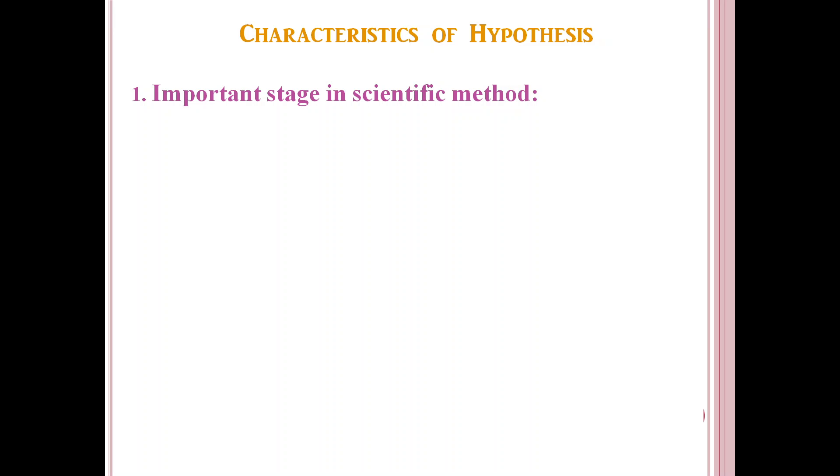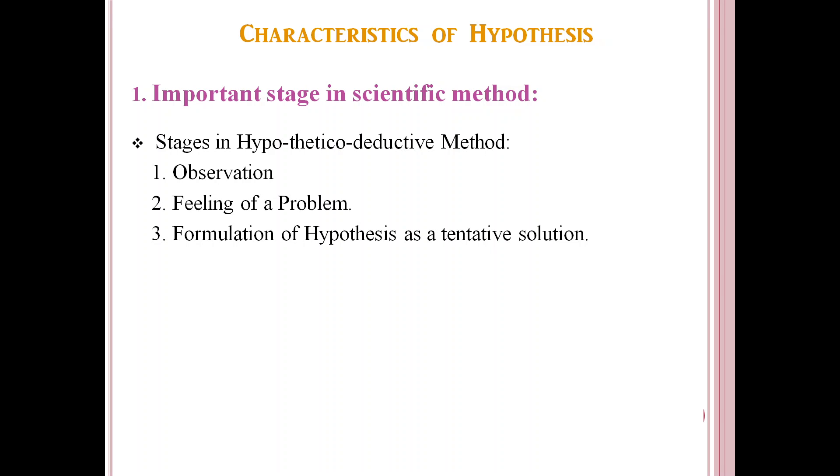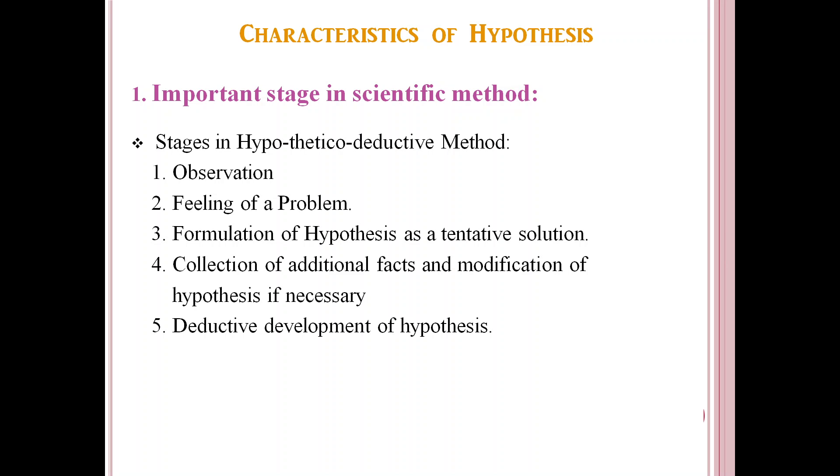You already know that there are six stages in hypothetical deductive method. First is observation. Second is feeling of a problem. Third is formulation of hypothesis as a tentative solution. Fourth is collection of additional facts and modification of hypothesis if necessary. Fifth is deductive development of hypothesis. And sixth is verification of hypothesis.